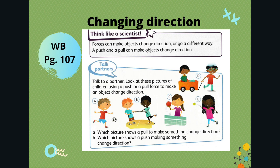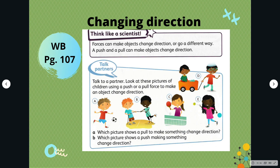Picture B, where two boys are pulling a rope, and picture D, where a boy is pulling a cart, use a pull to make something change direction. In picture A, where a boy is kicking a ball, picture C, where a girl is hitting the ball with a bat, and picture E, where a girl is throwing a ball, show a push to make something change direction.